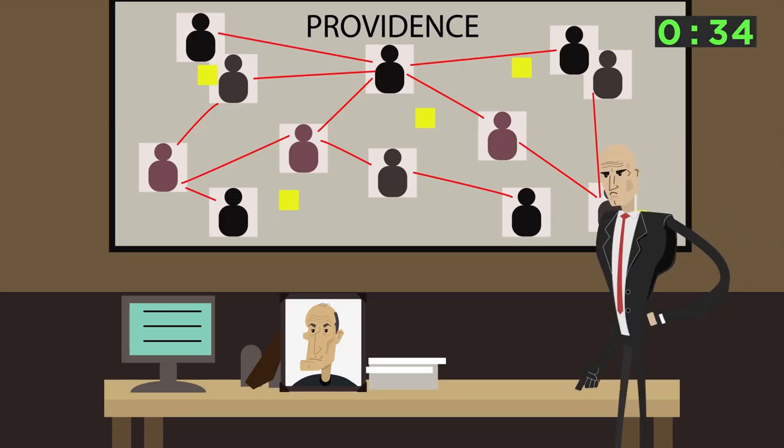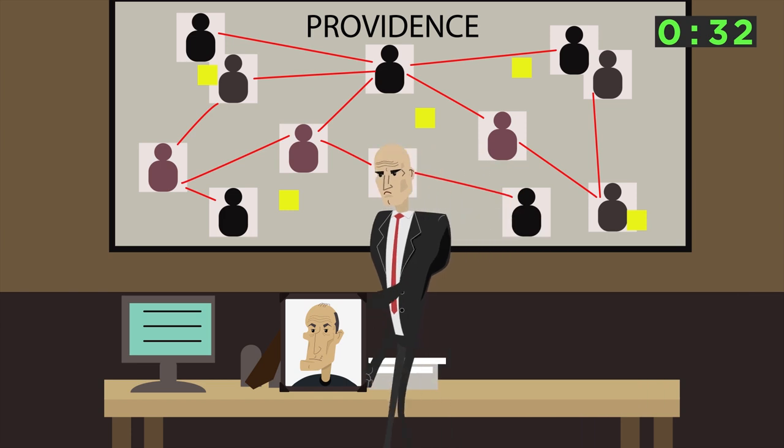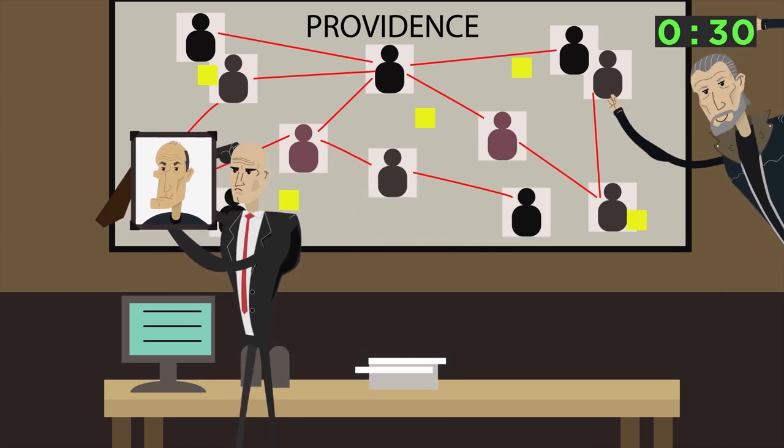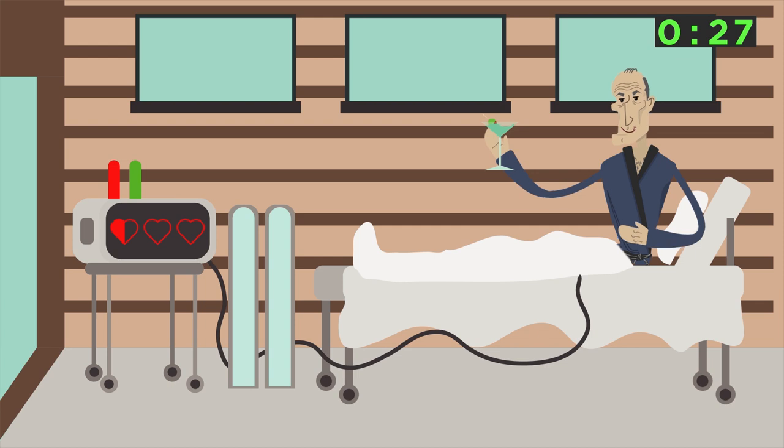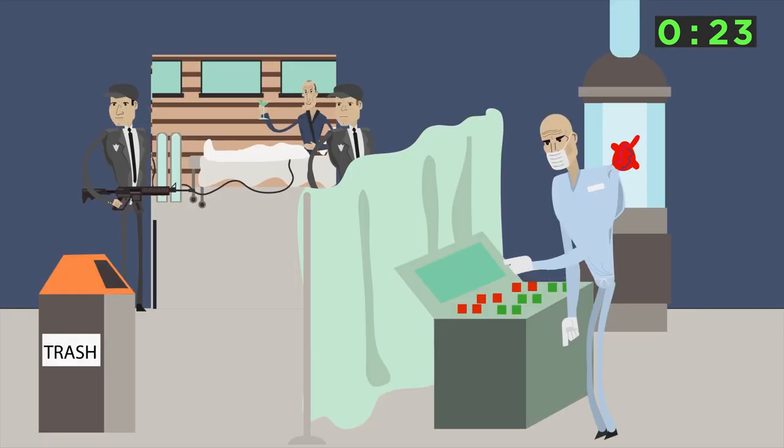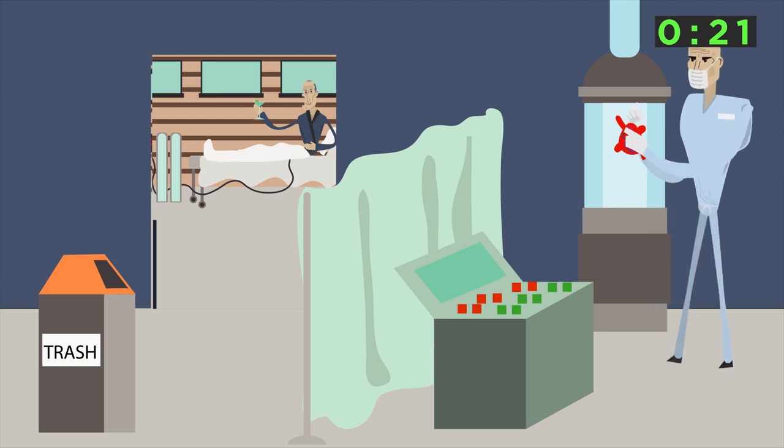Soders is revealed to be a covert agent for Providence. With 47 distracted by Soders, the Shadow Client manages to disappear. The ICA learns Soders intends to deliver a list of ICA operatives to Providence while being treated at a secret medical facility. Agent 47 assassinates Soders before he can hand over the operative's information.